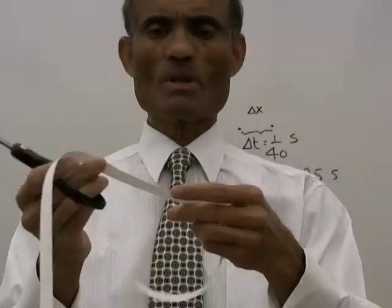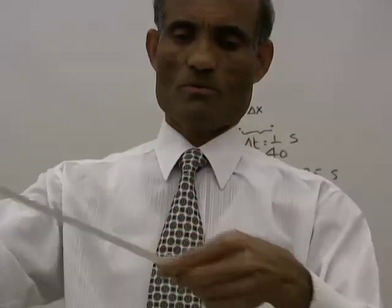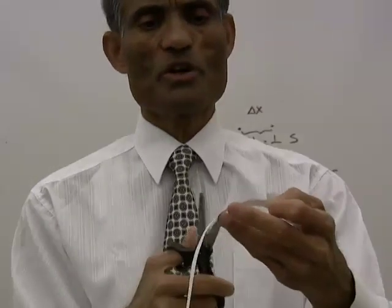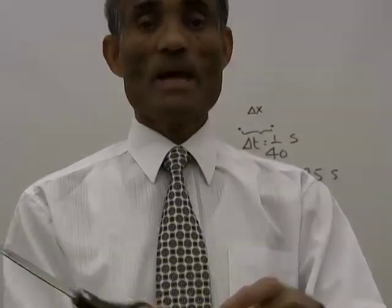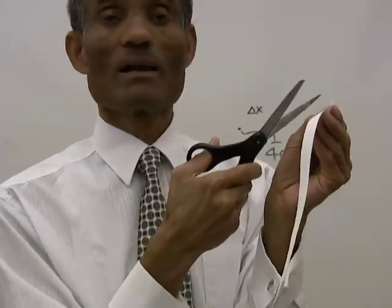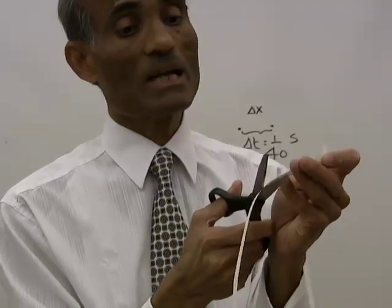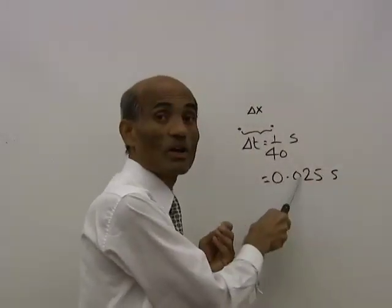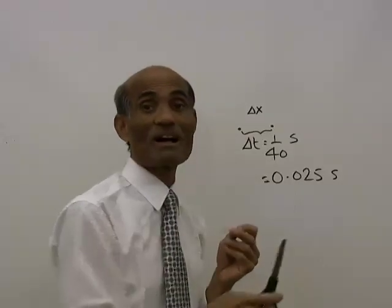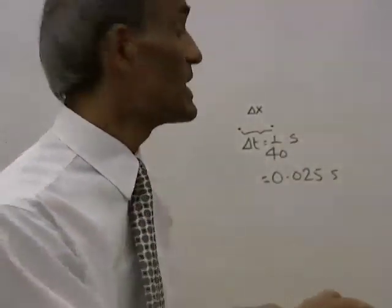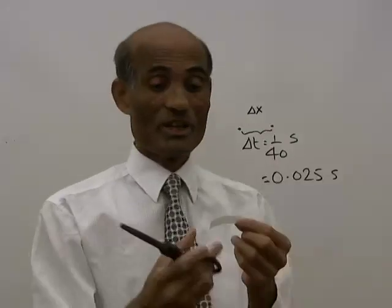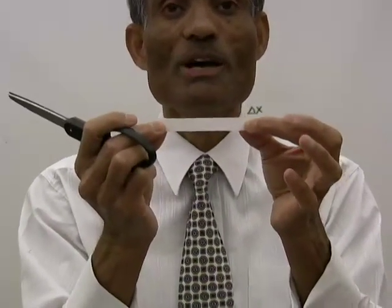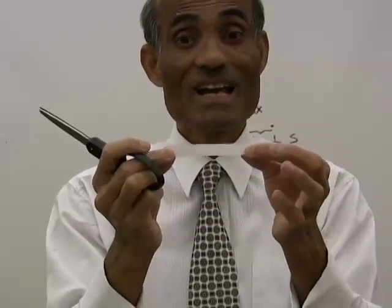Cut off the first few dots, then count 10 dots and cut off a piece. Now what does that distance represent? This distance represents the distance traveled in what time? There are 10 intervals, and each time interval is 0.025 seconds. Therefore, 10 time intervals is 0.025 multiplied by 10, which equals 0.25 seconds. This is the distance traveled by the paper in a time of 0.25 seconds.